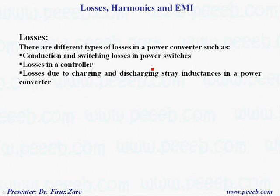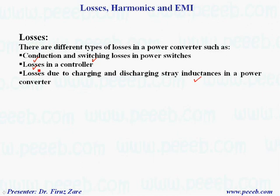There are different types of losses in a power converter, such as conduction loss and switching loss, which happen in the power switch when the switch is turning on and off and when the switch is in the on-state. Losses also occur in the controller, since it consists of microcontrollers, op-amps, and comparators that consume power. Additional losses arise from charging and discharging stray inductances, and in some applications, planar bus bars or significant stray capacitances can also create losses.